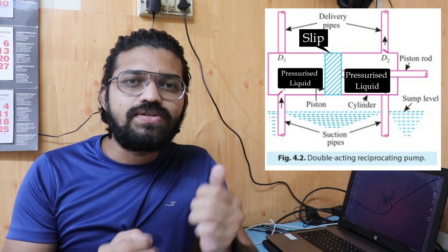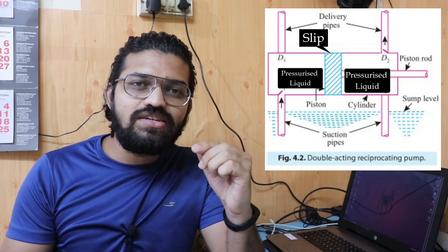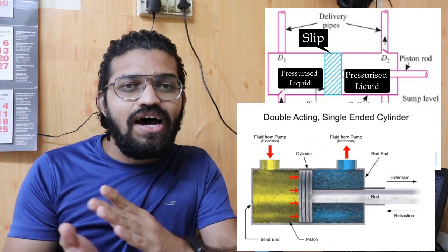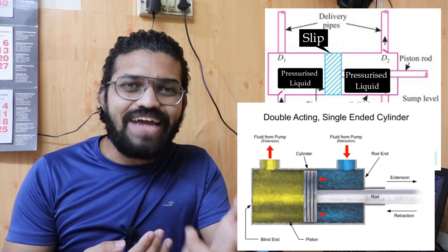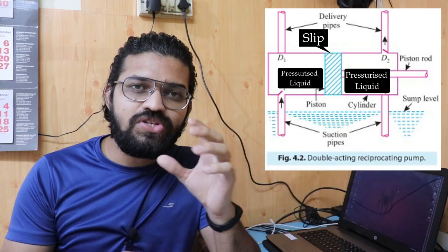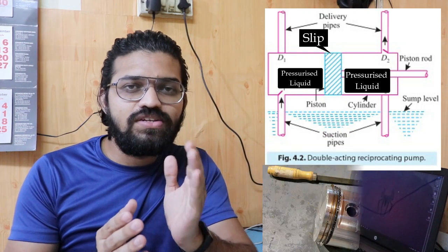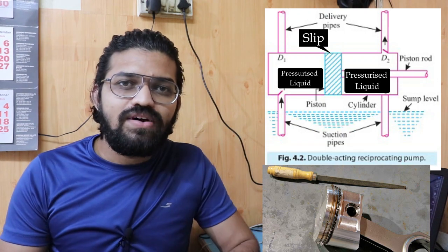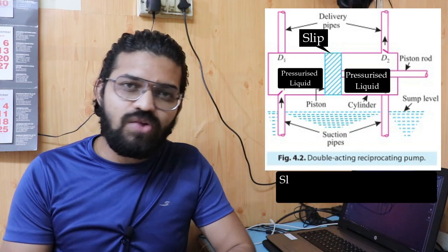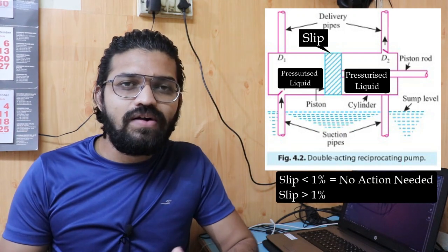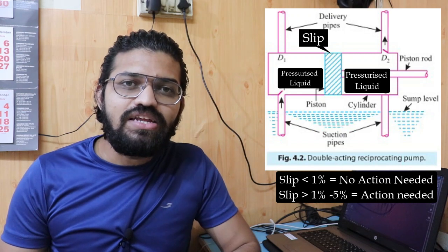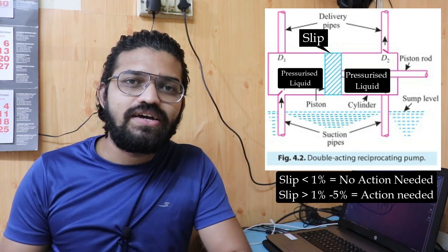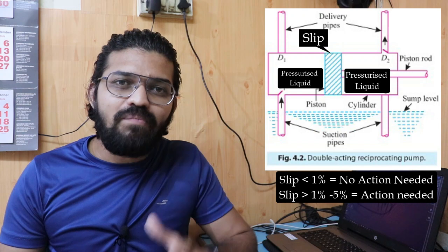Slip occurs due to wear of the piston rings or the cylinder liner rings, caused by the reciprocating motion of the piston over time. After some intervals, those piston rings and liner rings wear out and leakage — slip — occurs. If the slip in the pump is less than one percent, the pump is working absolutely fine and no further action is required. If the slip is between one to five percent, overhauling of the pump is required.